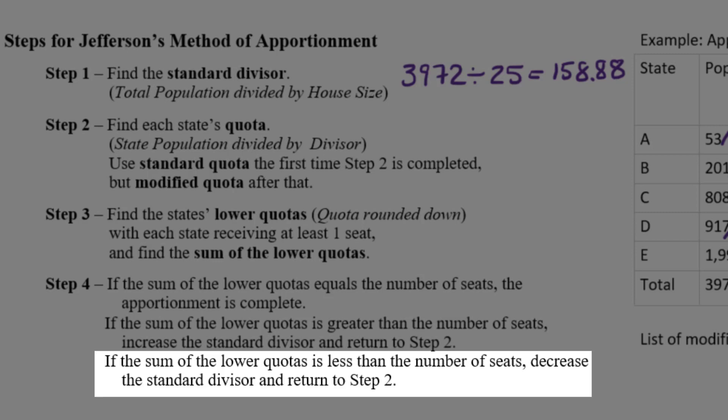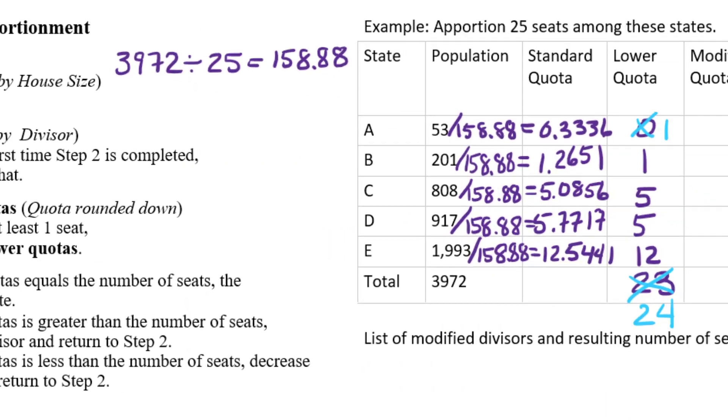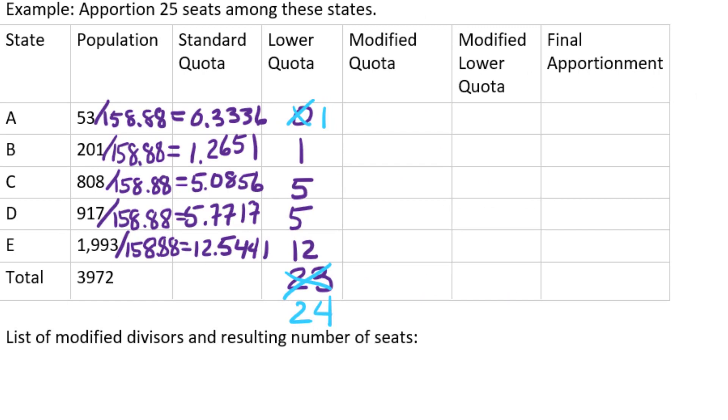we're going to adjust the standard divisor down, because dividing by a smaller number makes a larger quota. I'm going to keep track of all of the divisors I've used, by the way.